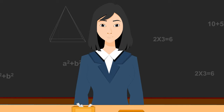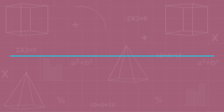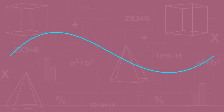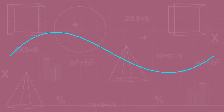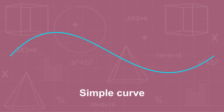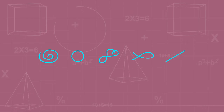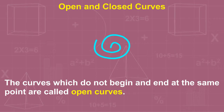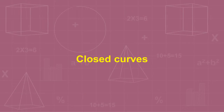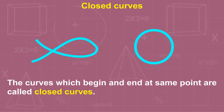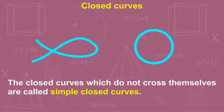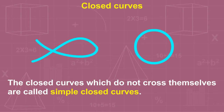Let's proceed further to learn about curves. A line or outline which gradually deviates from being straight for some or all of its length is known as a curve. A curve that does not cross itself is called a simple curve. The curves which do not begin and end at the same point are called open curves.